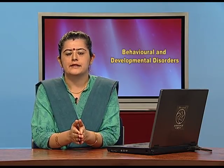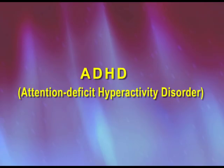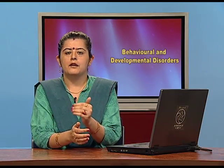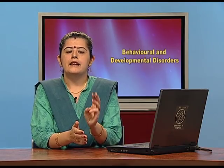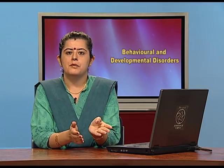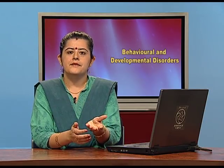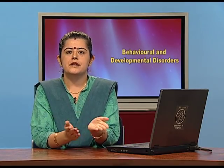Let's start with the first category of externalizing disorders: ADHD. ADHD involves attention deficit, hyperactivity, and impulsivity — three categories. A child having ADHD should ideally be diagnosed by seven years of age so that if the level is high, medicines can be started. It doesn't mean every child with ADHD will have all three categories; it's a combination. A child may have impulsivity and hyperactivity, another may have impulsivity and attention deficit.